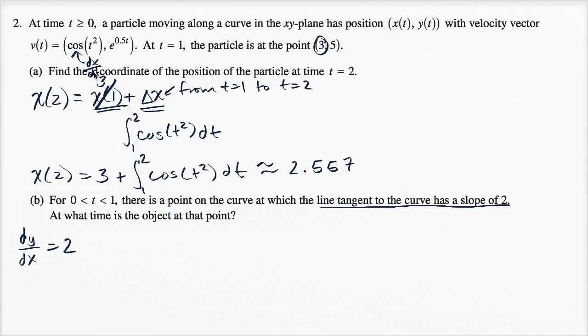The x component of the velocity function is the rate of change of x with respect to time, and the y component is the rate of change of y with respect to time. Using those two, we can figure out the rate of change of y with respect to x. If you take the derivative of y with respect to t and divide it by the derivative of x with respect to t,